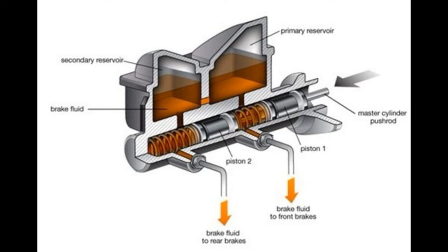Second, the cylinder: it is the airtight housing inside which the piston moves with the movement of the brake pedal, causing conversion and multiplication of force. The cylinder is usually made up of cast iron or aluminium, and it is connected with the reservoir through an inlet valve and with the brake lines through an outlet valve.